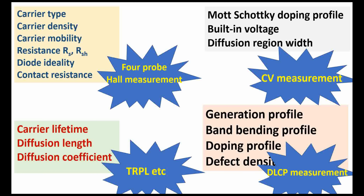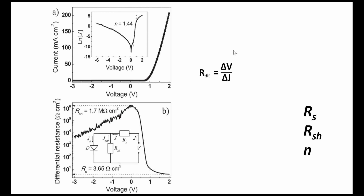The first goal is to find out the values of series resistance and shunt resistance. It is straightforward if you plot the dark IV curve. You plot current in a semi-logarithmic way — current on a logarithmic axis and voltage linearly. From the positive side, the slope of that portion gives the diode ideality factor value.